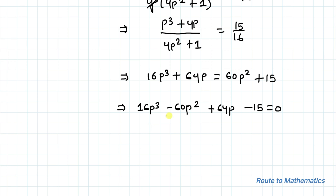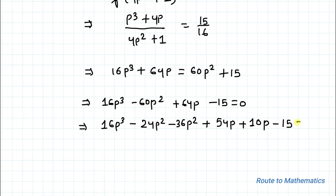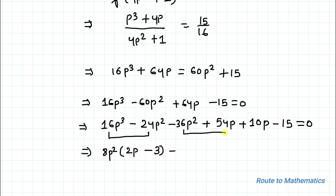We have a cubic polynomial. We can factorize this using the grouping method. We rewrite it as 16p³ + 24p² - 36p² - 54p + 10p - 15 equals 0. Taking 8p² common from the first two terms gives 8p²(2p - 3), then taking -18p common gives -18p(2p - 3), and taking 5 common gives 5(2p - 3).